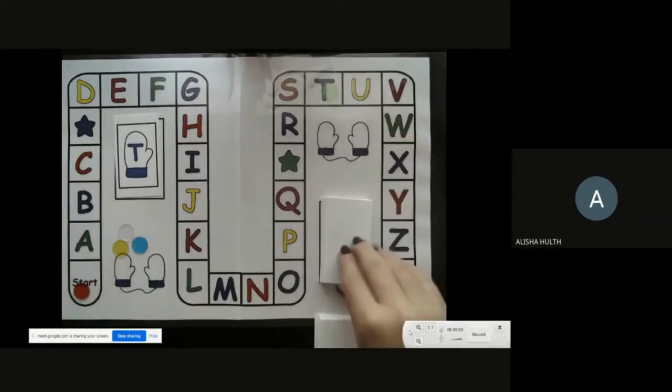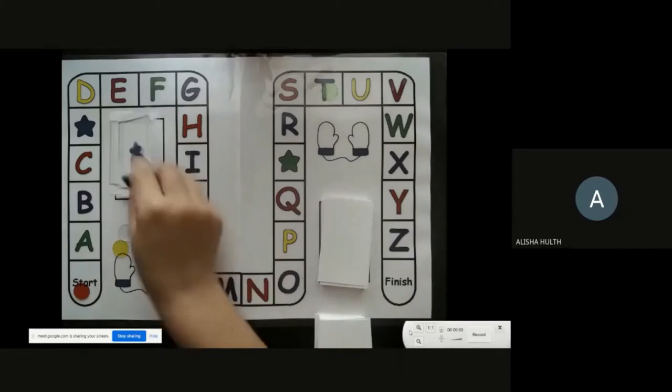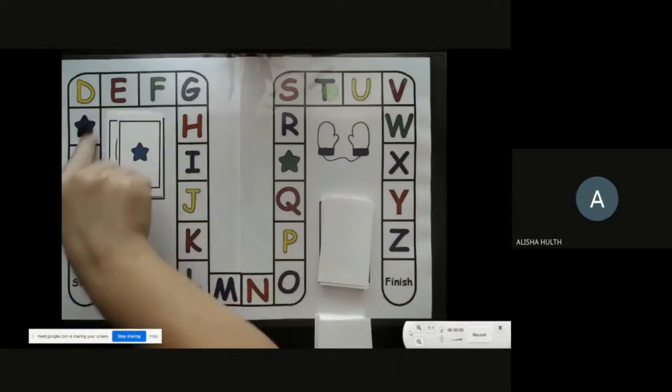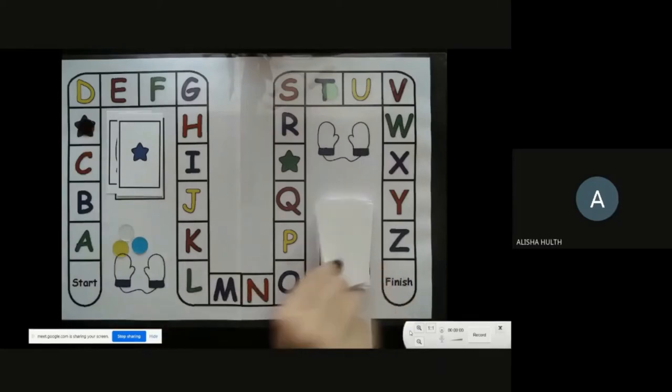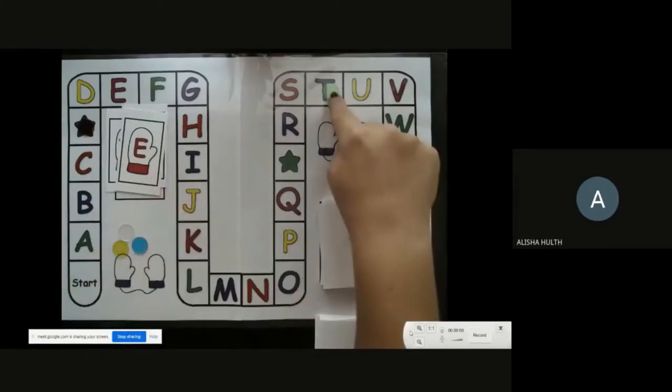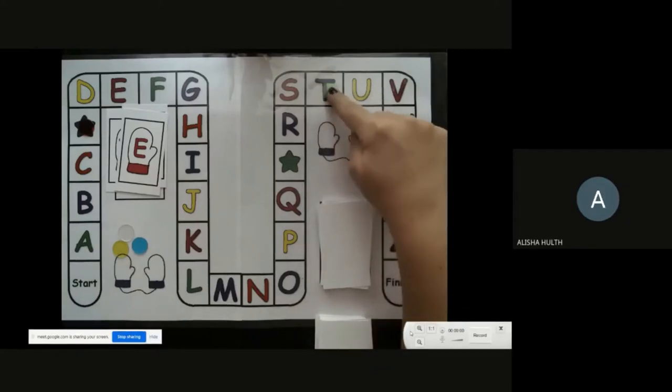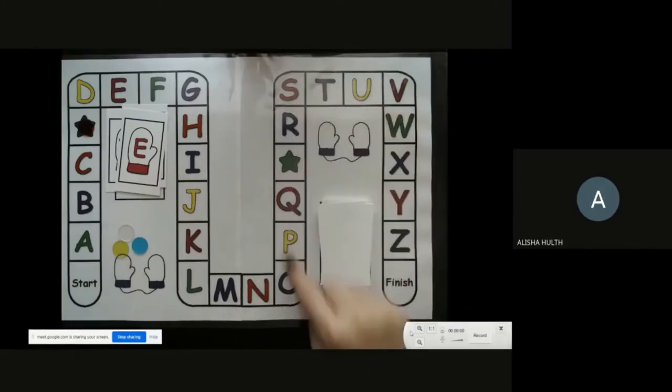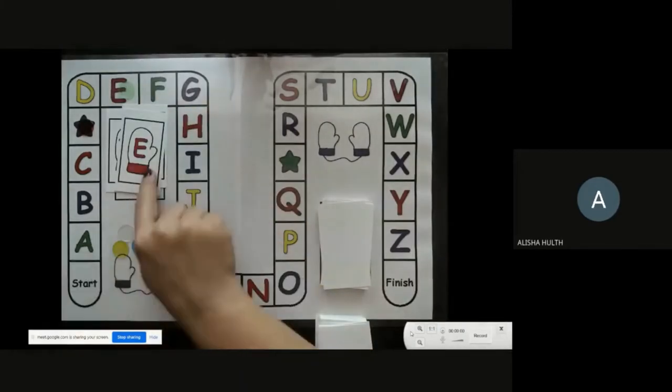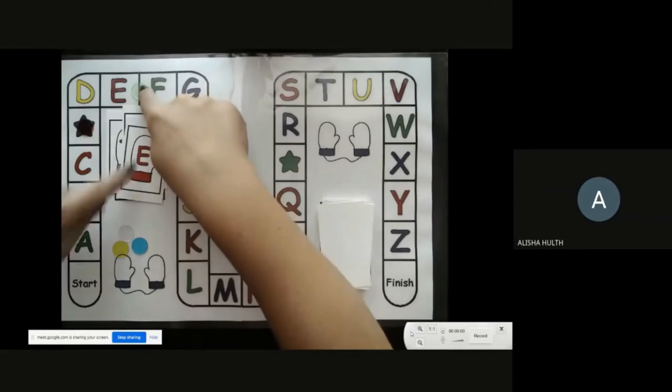With this one you get lucky and you don't have to do anything. You can just move to the star. Okay, the next letter is E. Even though I am already up here, I have to go backwards. So again, tell me the letter name. Letter E.